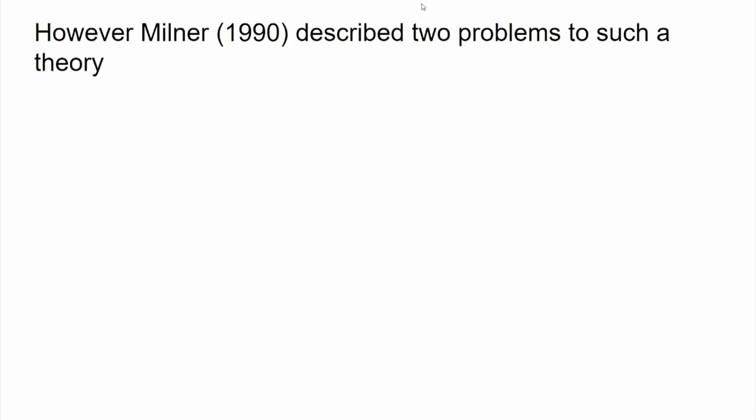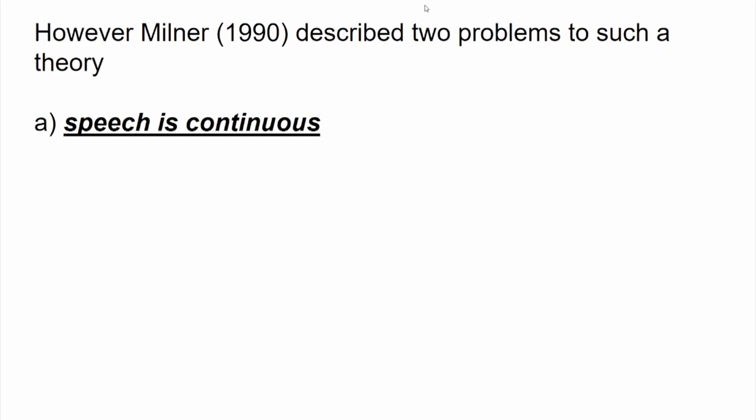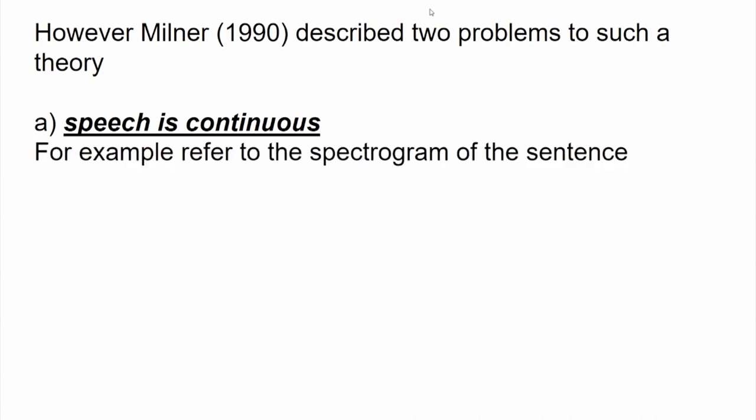Milner (1990) described two problems with the theory that word-by-word perception generates meaning in speech. First, he found that speech is continuous in nature. To illustrate this, we can refer to a spectrogram — an output of speech that measures the air pressure produced in front of the mouth when words are spoken.